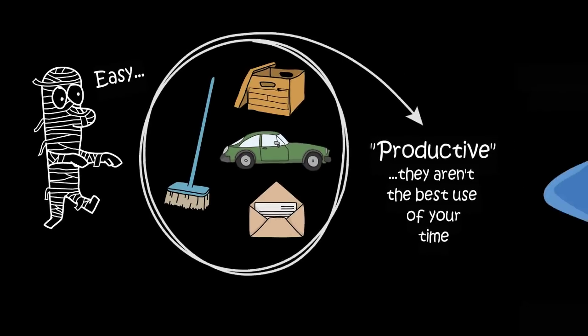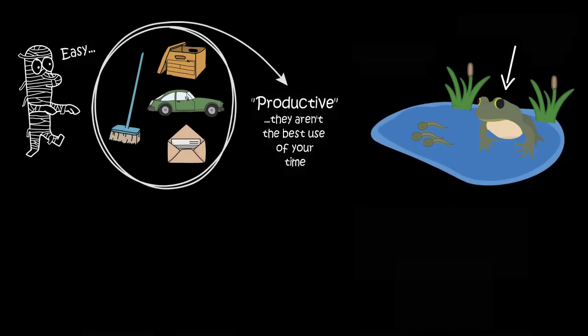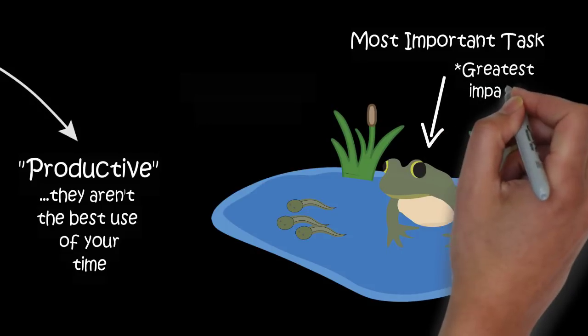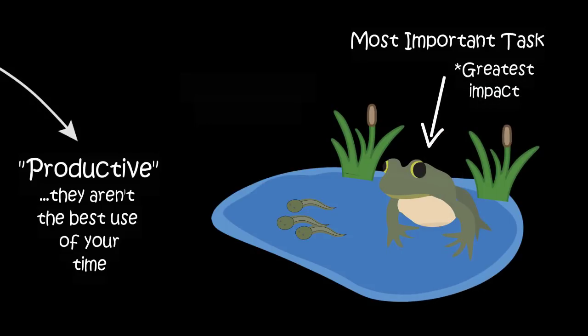What you really should be doing is eating that frog. Brian Tracy says your frog is your biggest, most important task, the one you are most likely to procrastinate on if you don't do something about it. It's also the one task that can have the greatest impact on your life at the moment.